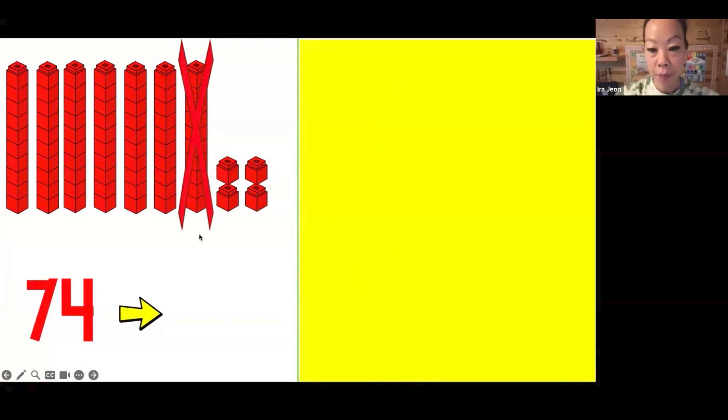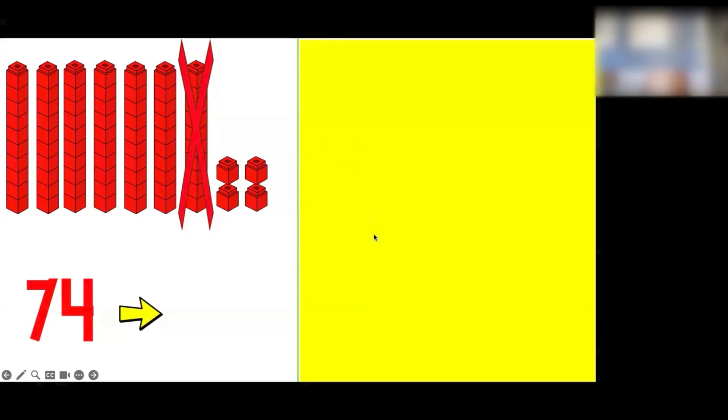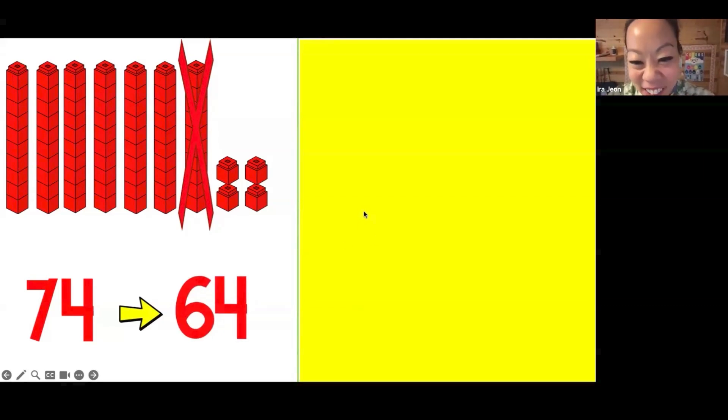Let's do a couple more. If I have 74 and then I take 10 away, what would be my new amount? Do whatever works for you: count the rest of the blocks or look at the 10 spot and change that number depending on if we are adding 10 or taking away 10. Tristan, do you know what the new amount would be? 64. Good job.